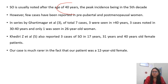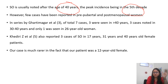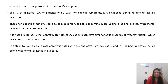Struma ovarii is usually seen at the age of 40 years, peaking in approximately the 5th decade of life. Few cases have been reported in pre-pubertal and post-menopausal patients — so it can be seen at extremes of age. Gati Magadi reported 7 cases: 3 over 40 years, 3 between 30–40 years, and 1 at 26 years. Khedri et al. reported 3 cases in patients aged 17, 31, and 40 years. Our case is much rarer, as our patient was only 12 years old.